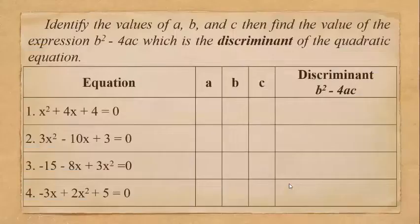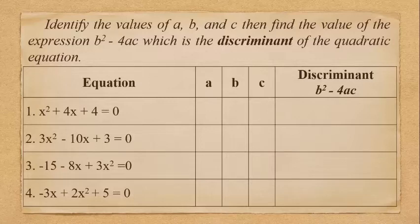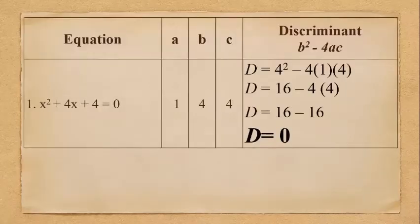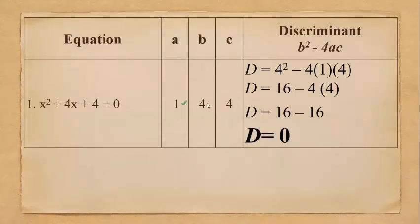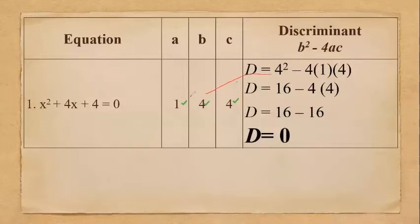For the examples, identify the values of A, B, and C, then find the discriminant B squared minus 4AC. For the first equation, x squared plus 4x plus 4 equals 0, we have A equal to 1, B is 4, and C is 4. Substituting: 4 squared is 16, minus 4 times 1 times 4 is 16, giving 16 minus 16 equals 0.